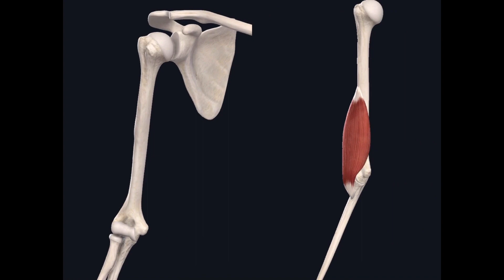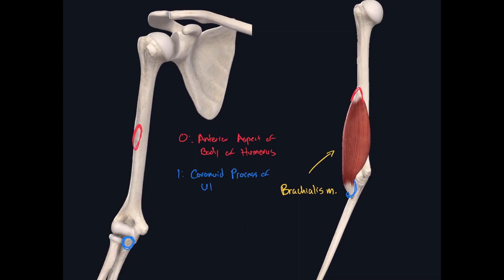This muscle is called the brachialis muscle. Its origin is the anterior aspect of the body of the humerus, shown on the left image. The insertion is on the ulna — specifically the coronoid process of the ulna, also indicated on the left image. The action for this muscle is simply to flex the elbow joint.